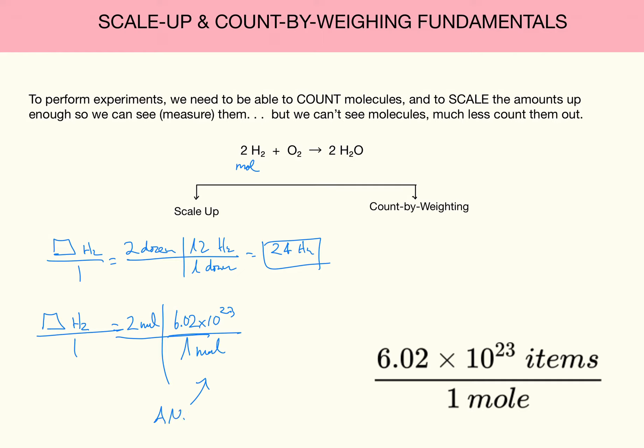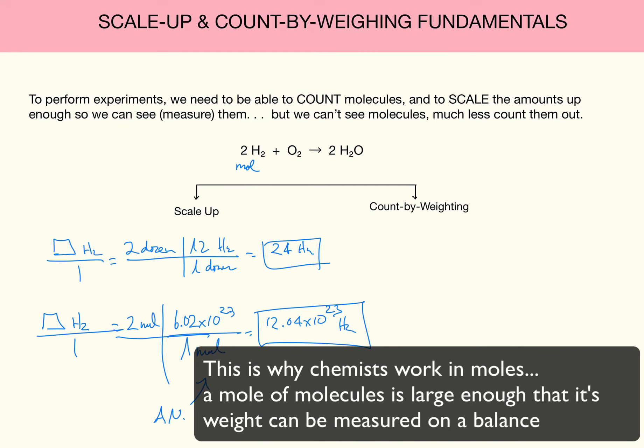And what do we get? 12.04 times 10 to the 23rd of H₂ molecule. Now this is a huge number, 12.04. As a matter of fact, this is so big I could actually see it. If I put this many molecules of H₂ on my balance, I'll be able to actually see a number. I can measure that. And so with chemistry, the bottom line is we are going to scale up with this thing called Avogadro's number.